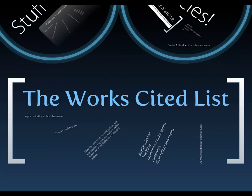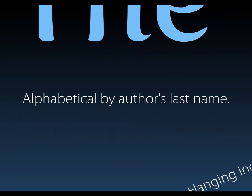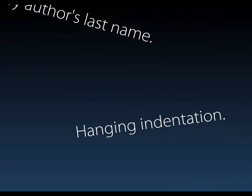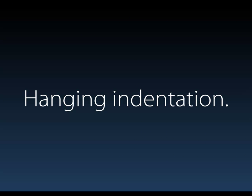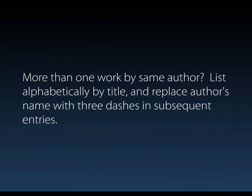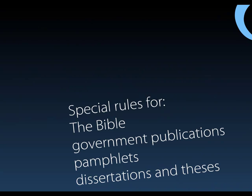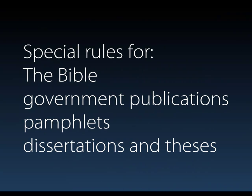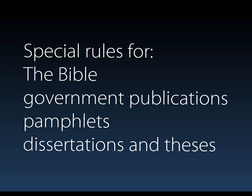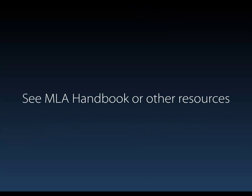The Works Cited list is the second big part of citation with MLA style. It comes at the end of your paper and includes all of the works you cite, listed alphabetically by the author's last name. You're going to be using hanging indentation, as you'll see in the examples. If you have more than one work by the same author, list them alphabetically by title and replace the author's name with three dashes in subsequent entries. There are also special rules for things like the Bible, government publications, pamphlets, and dissertations and theses, so consult the MLA handbook or other resources for those.